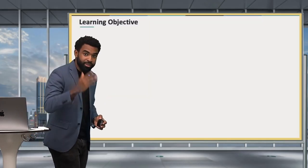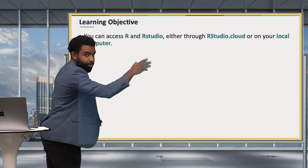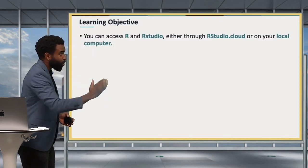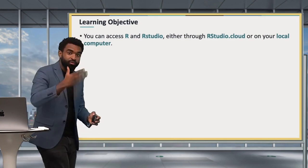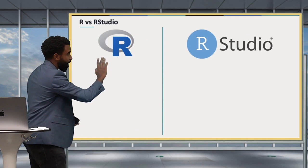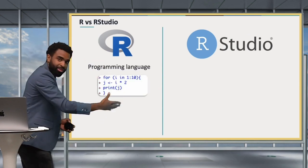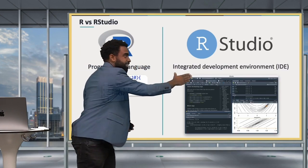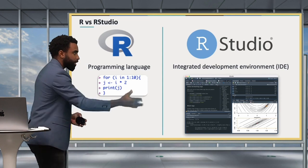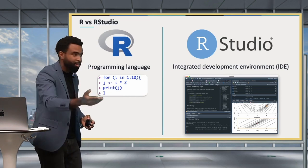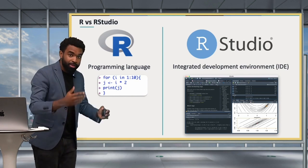Your learning objective for this lesson is that you can access R and RStudio either through RStudio.cloud or through your local computer. The first distinction to make is between R and RStudio: R is a programming language you're going to use to write code, and RStudio is an integrated development environment, or IDE, that makes working with R easier. There are many other IDEs you could use, but RStudio is by far the best.